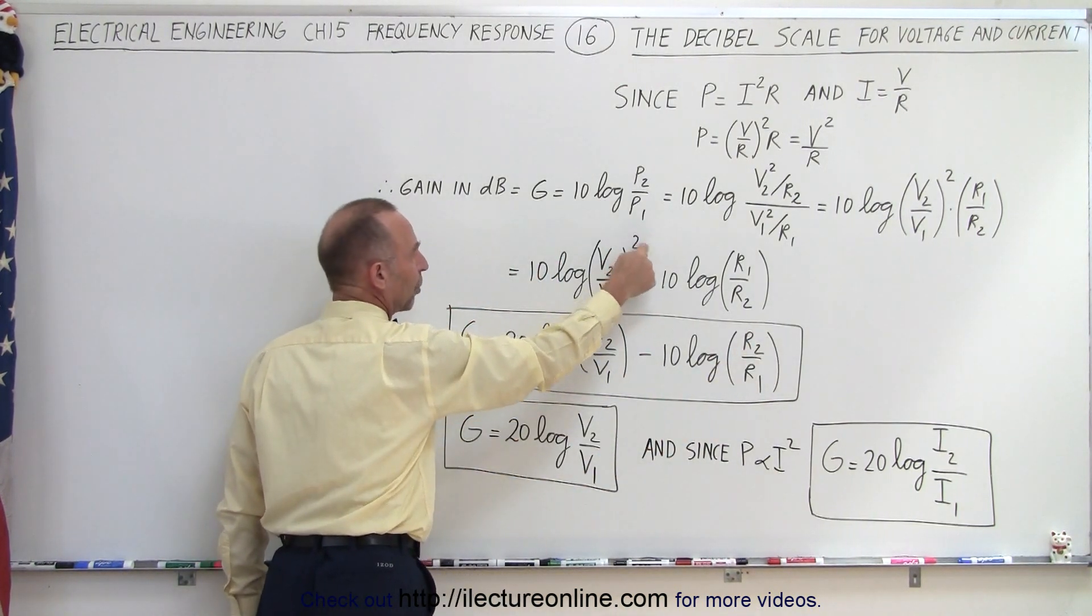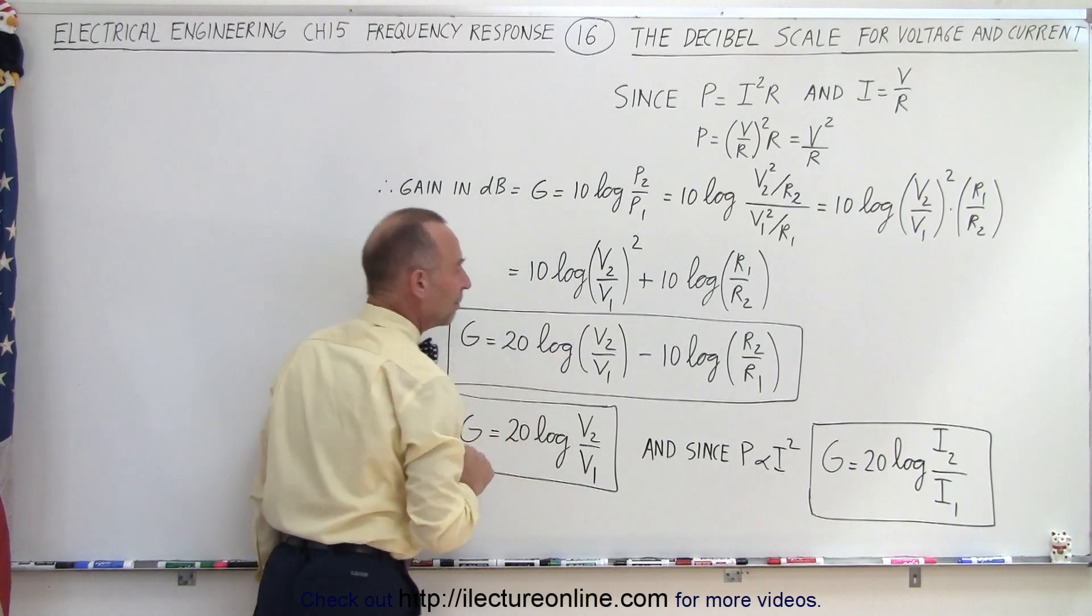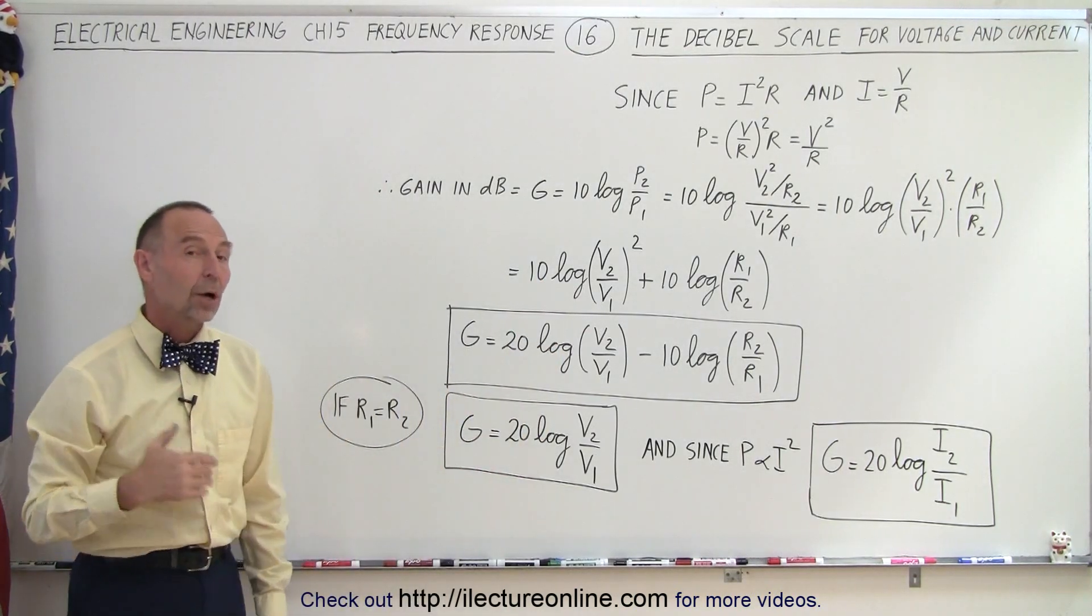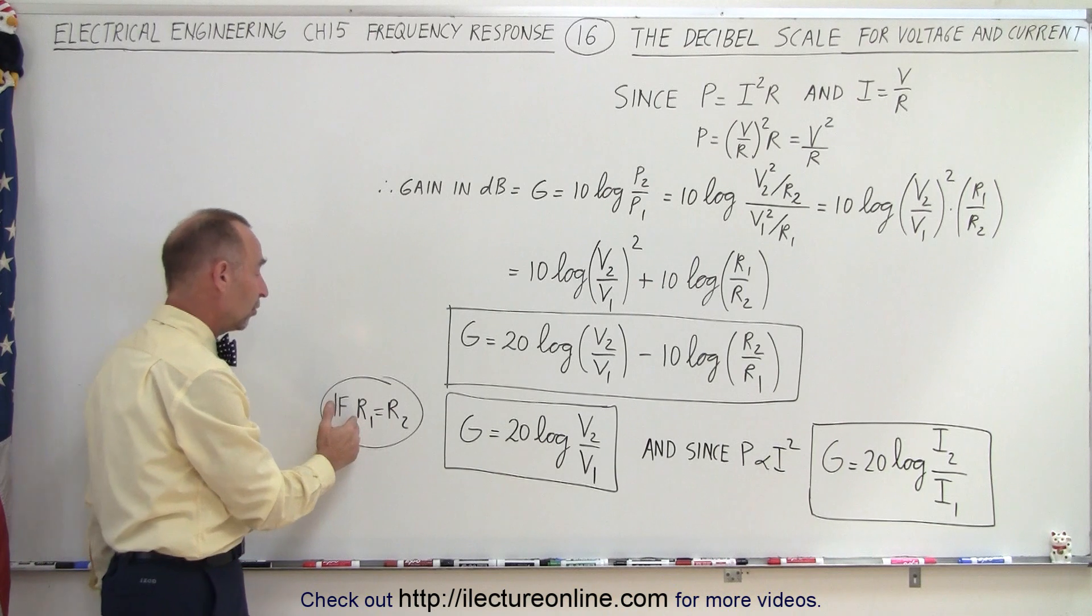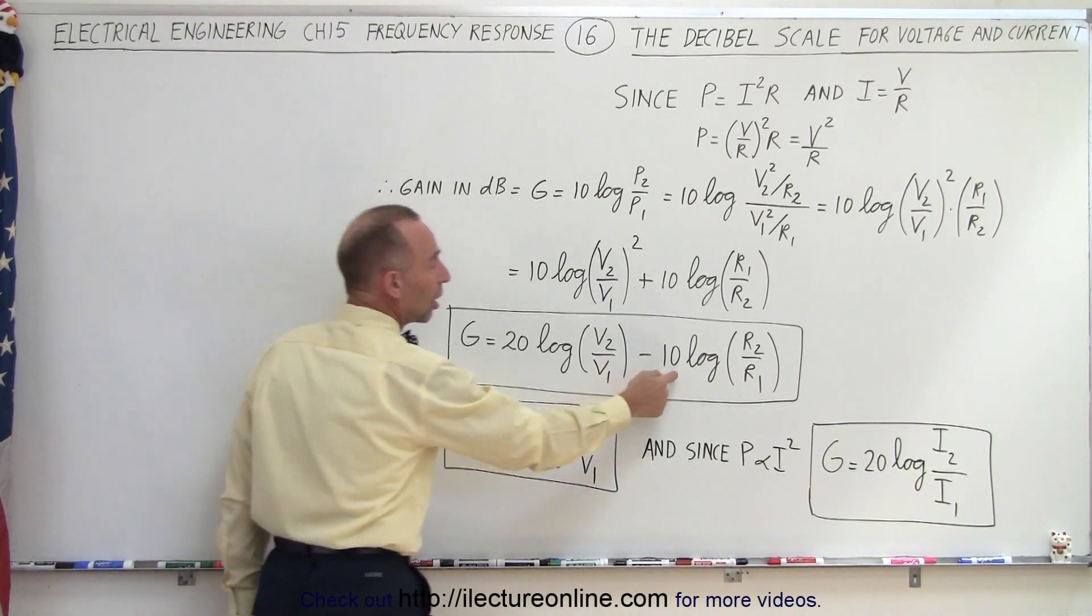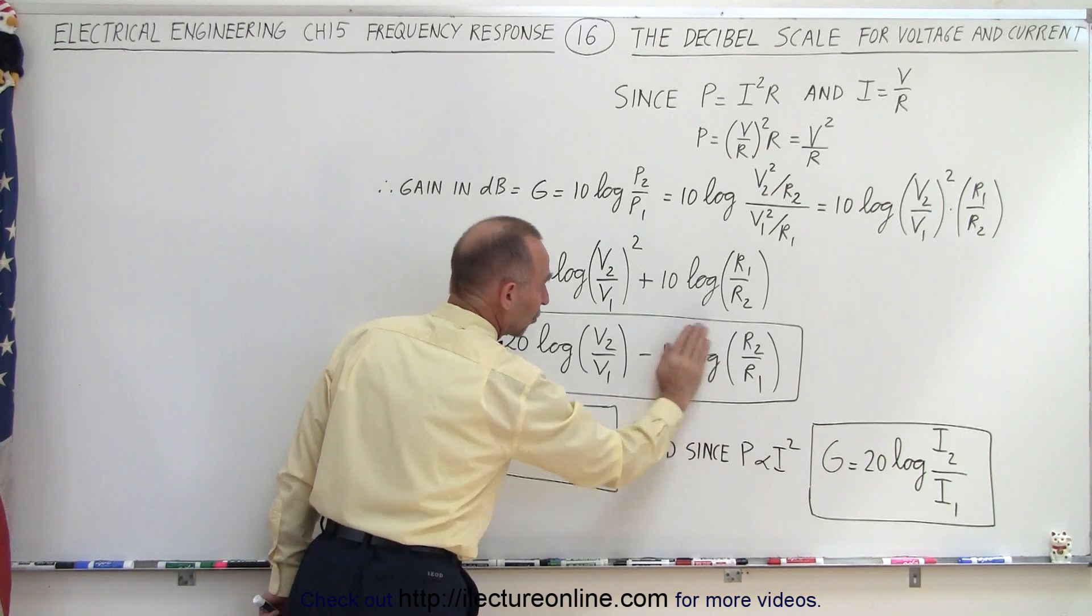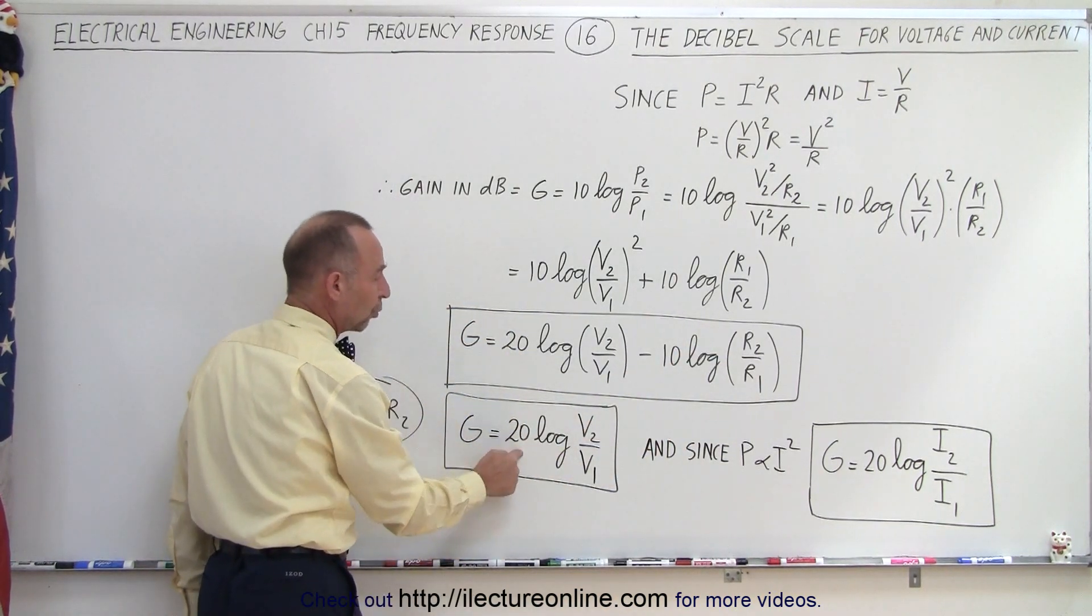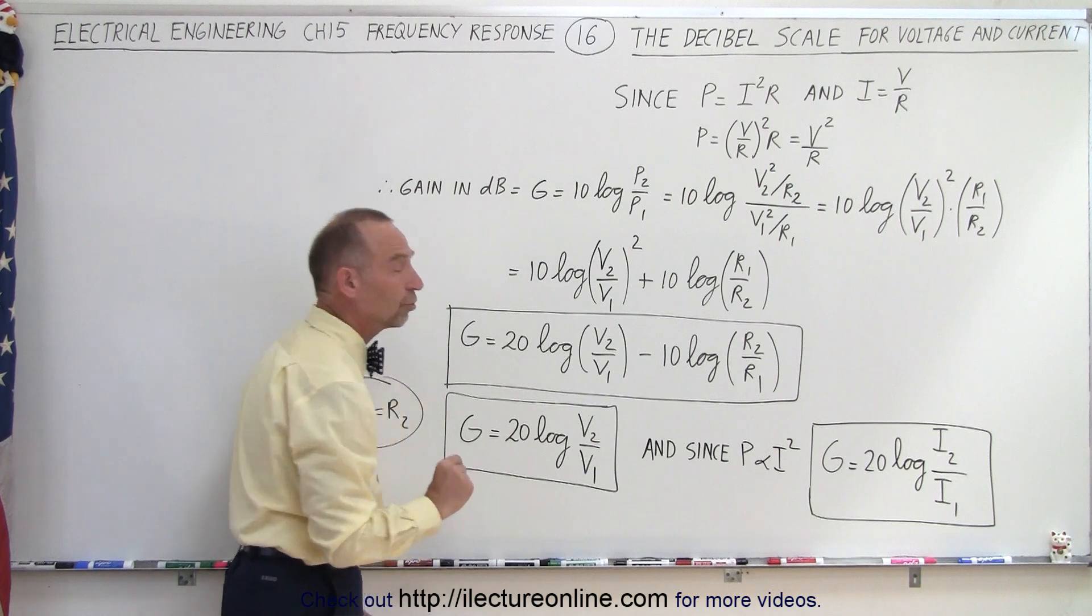Now quite often the input resistance and the output resistance is the same, and so if that's the case, the log of 1 is equal to 0, this term drops off and we can simply simplify it that the gain is 20 times the log of the ratio of the voltages.